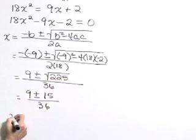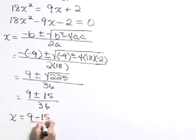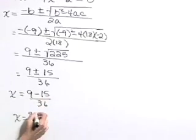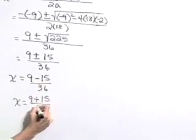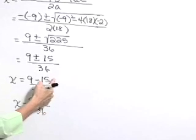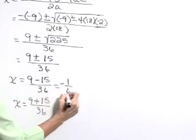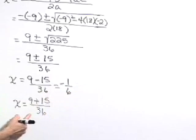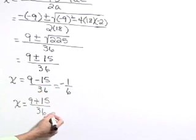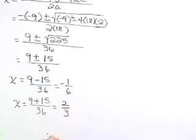So let's split this into its two possible solutions. x is 9 minus 15 over 36 or x is 9 plus 15 over 36. With our first option, that's a negative 6 over 36 reduces to a negative 1 sixth or x is equal to 24 over 36 and that reduces to 2 thirds.